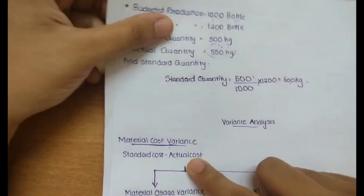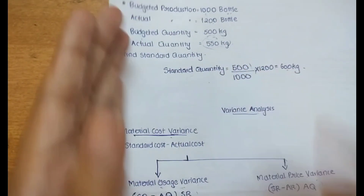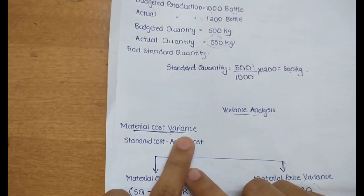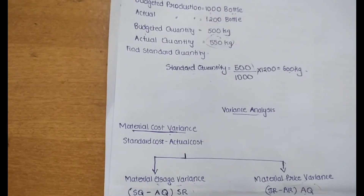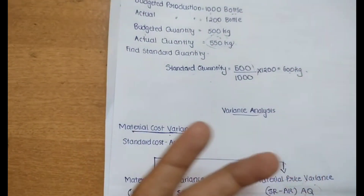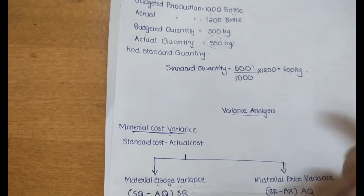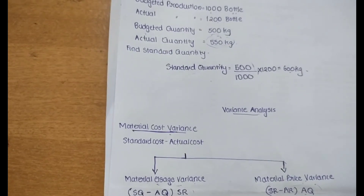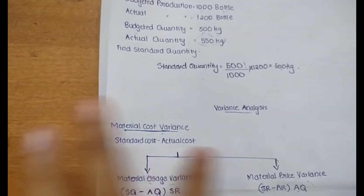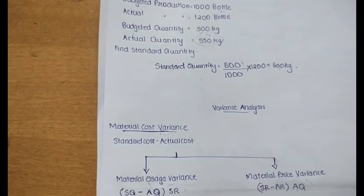Now we have an analysis of variance. First of all, we have a material cost variance. The material cost variance is the difference between standard cost and actual cost. This breaks down into material usage variance and material price variance.